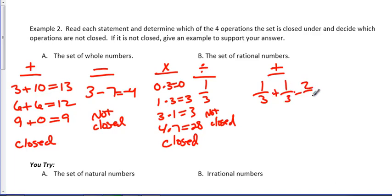1 third plus 1 third, 2 thirds. Still a fraction. You may not be good at adding fractions, but my guess is you probably understand that when you add a fraction with a fraction, your result is a fraction. When you subtract a fraction with a fraction, your result is a fraction. When you add a whole number and a fraction, your answer is going to be a whole number and a fraction, or we call that a mixed number, or you could just write it in a fraction form. Addition with rational numbers is closed.